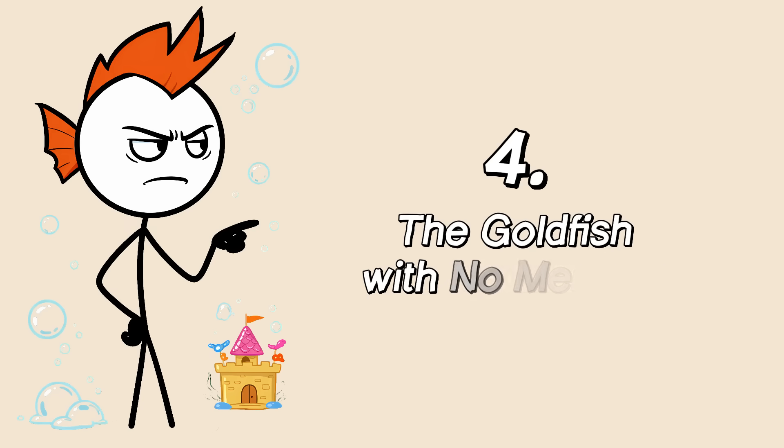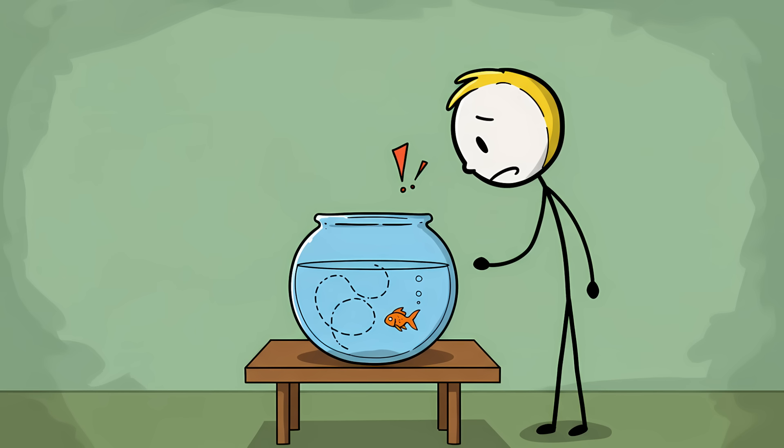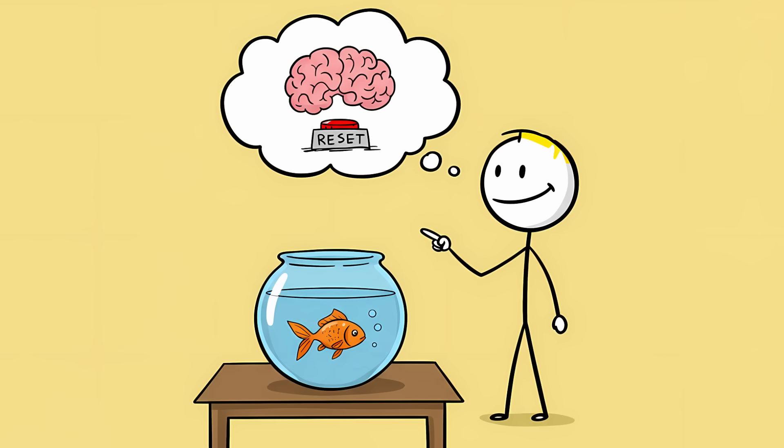Number four. The goldfish with no memory. The goldfish. A beautiful, simple creature doomed to a life of endless loops. It swims to one side of its bowl, completely forgets where it is and how it got there, and then, with the wonder of a newborn babe, discovers the other side of the bowl for the first time. Three seconds later, the cycle repeats. We project this Sisyphean tragedy onto them, imagining their tiny brains are constantly hitting the reset button.